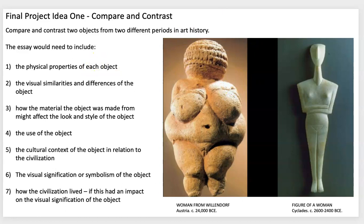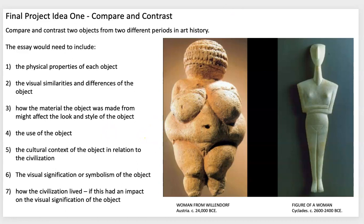The information you gather for your outline you can reuse in your final project. If you change artworks, you would update your images, but if you already have that information, you can reuse it. For physical properties, you'll talk about visual similarities and differences, and how the material might affect the style and look of the object.